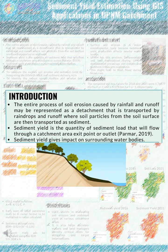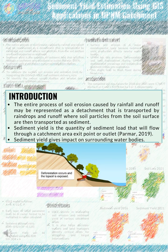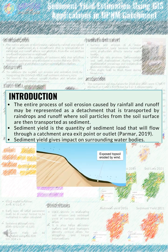The studies of reservoir sedimentation, river morphology, salt and water conservation planning, water quality modeling, and the design of effective erosion control structures are required to estimate sediment production. The entire process of soil erosion caused by rainfall and runoff may be represented as a detachment transported by raindrops and runoff, where soil particles from the soil surface are then transported as sediment. This represents the entirety of the process as you can see in the video below.